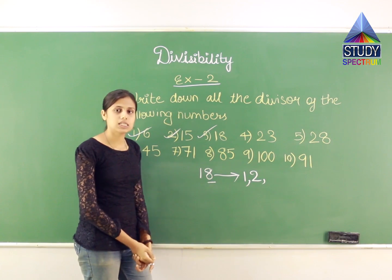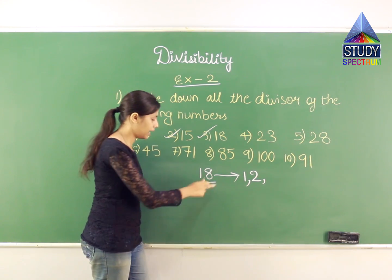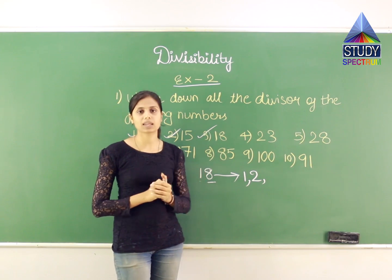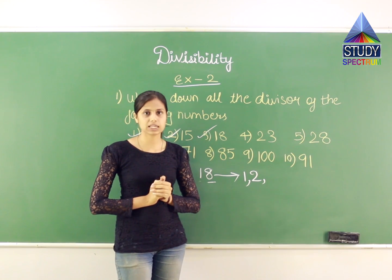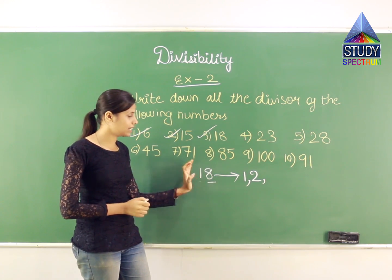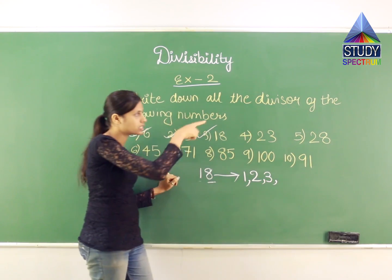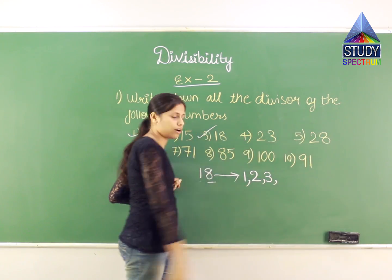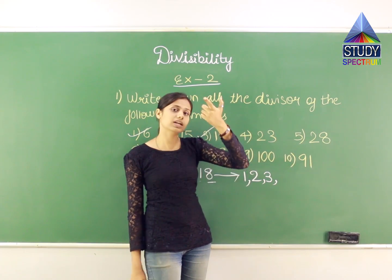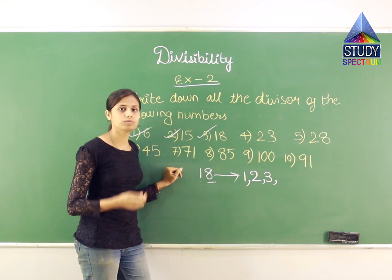Now we will talk about 3. Applying the divisibility test: 8+1=9. Is 9 divisible by 3? 3×3=9 — yes, 9 is divisible by 3. So 18 is also divisible by 3. Just like in the divisibility exercise, over here you are finding the divisors — the numbers that were given in exercise 1. So I have 3 as a divisor for 18.